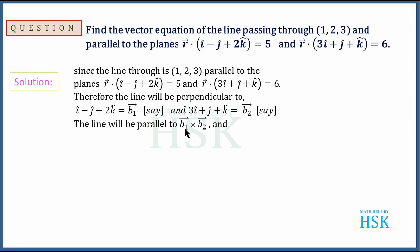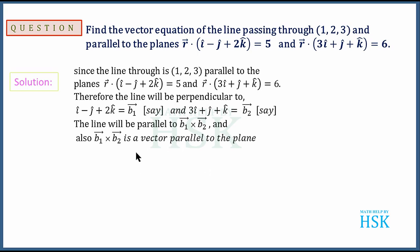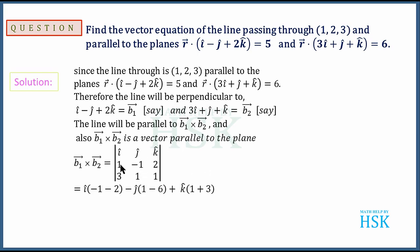If we take the cross product of b1 and b2, we get a vector which is perpendicular to both these vectors, which means it will be parallel to both the planes. Since we are required to find the equation of the line parallel to the planes, b1 cross b2 will give the direction vector parallel to both planes.